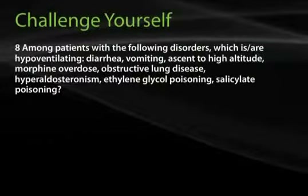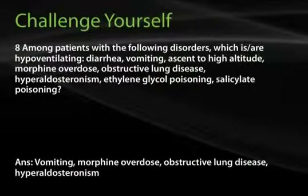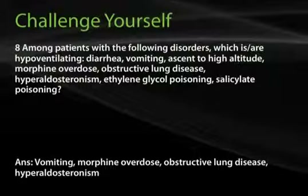Question 8: Among patients with the following disorders, which are hypoventilating — diarrhea, vomiting, ascent to high altitude, morphine overdose, obstructive lung disease, hyperaldosteronism, ethylene glycol poisoning, or salicylate poisoning? The answer is vomiting, morphine overdose, obstructive lung disease, and hyperaldosteronism. Hypoventilation occurs either as a primary respiratory acidosis (morphine overdose, obstructive lung disease) or as compensation for metabolic alkalosis (vomiting, hyperaldosteronism).